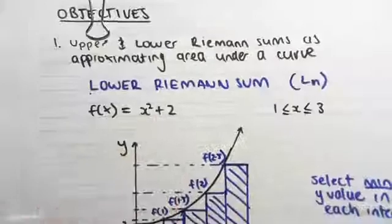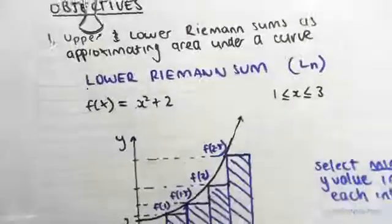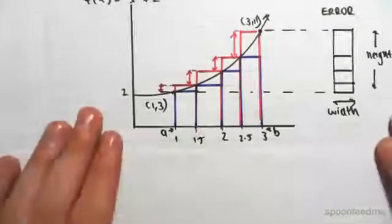The first video was lower Riemann sum and upper Riemann sum, looking at this curve, x squared plus 2. So simply, the first way of looking at it, there's two ways to look at errors.